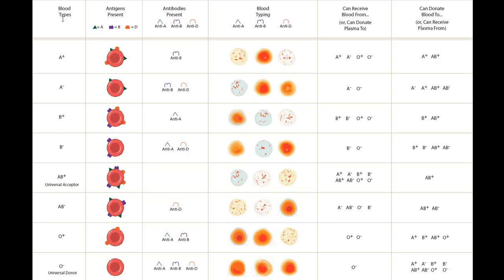A quick little video on blood types. We'll talk about the main types of blood types, antigens present on the cells of those with particular blood types, antibodies present in the plasma, and how you detect the different blood types. We'll cover who can receive blood from whom, who can donate blood to whom, and extend to plasma donation — since you have antibodies in your plasma, you can't donate or receive plasma from just anyone.